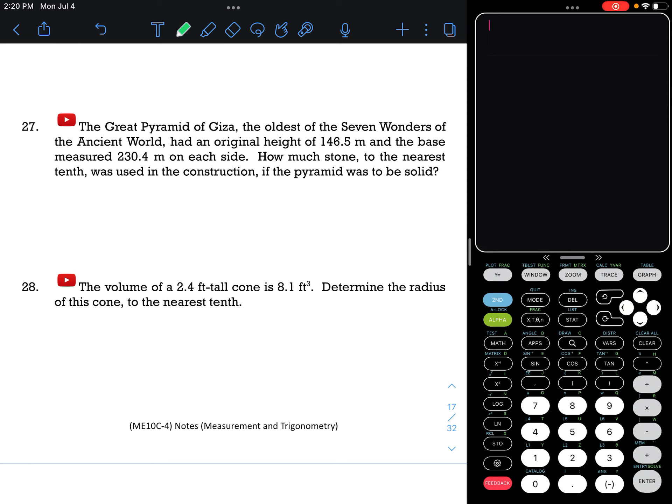Question 27. The Great Pyramid of Giza, the oldest of the seven wonders of the ancient world and the only one still standing, had an original height of 146.5 meters and a base that measured 230.4 meters on each side. How much stone, to the nearest tenth, was used in the construction if the pyramid was to be solid?